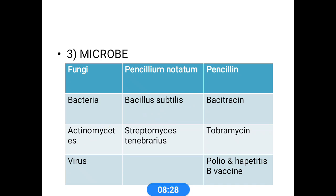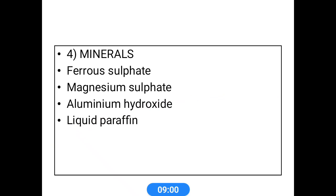The most important natural source is microbiological sources — including fungi, bacteria, actinomyces, and viruses. Well-known examples are penicillin from Penicillium notatum (a fungus), Bacitracin from Bacillus subtilis (a bacterium), and Tobramycin from Streptomyces tenebrarius (an actinomyces). Examples from viruses include polio and Hepatitis B vaccines. Mineral sources include ferrous sulfate, magnesium sulfate, aluminum hydroxide, and liquid paraffin.